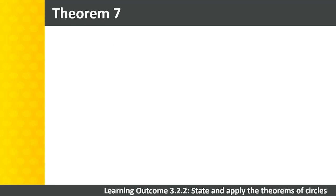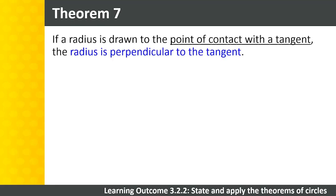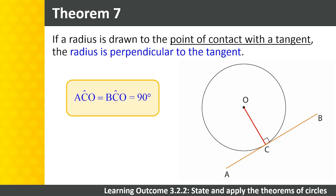Theorem 7 states that if a radius is drawn to the point of contact with a tangent, the radius is perpendicular to the tangent. In this diagram, we have radius OC drawn to the point of contact C with tangent AB. So we can say that angle ACO equals angle BCO, which equals 90 degrees. The abbreviation to use for this theorem is tangent perpendicular to radius.